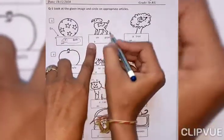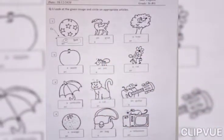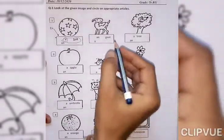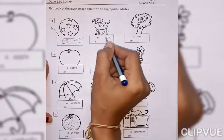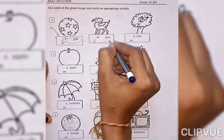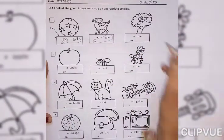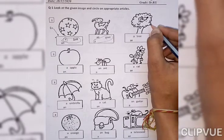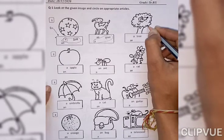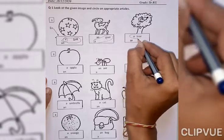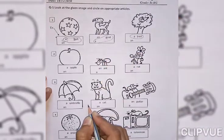Now, next one is goat. So, everyone circle on a goat. Okay, what is this? Tree. A tree, because T is consonant. That's why A article comes.